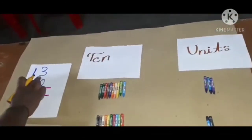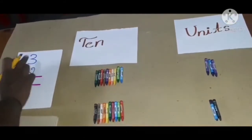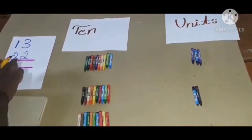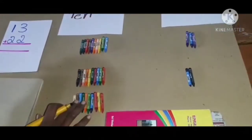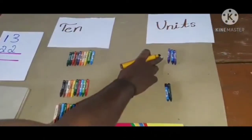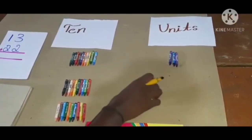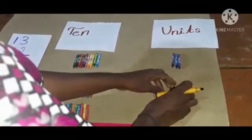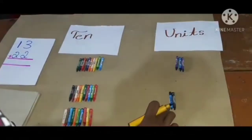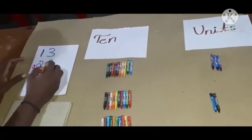Next, 13 plus 22. In 13, 1 ten, 3 units. In 22, 2 tens, 2 units. Now count units first. Here 3 units, here 2. So 3 plus 2: 1, 2, 3, 4, 5. 3 plus 2, 5.